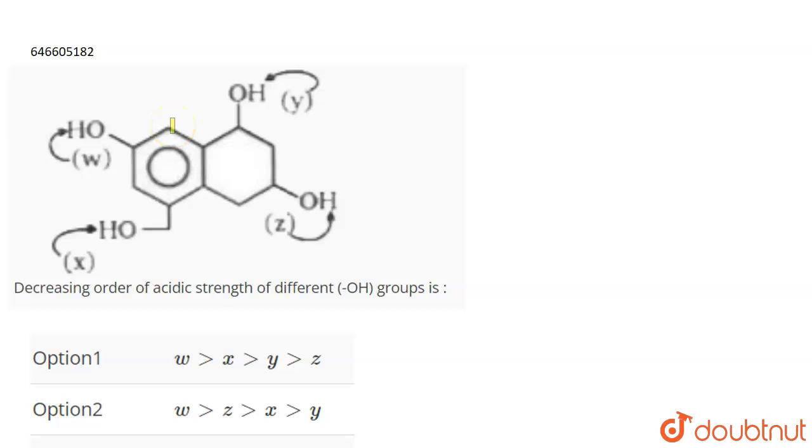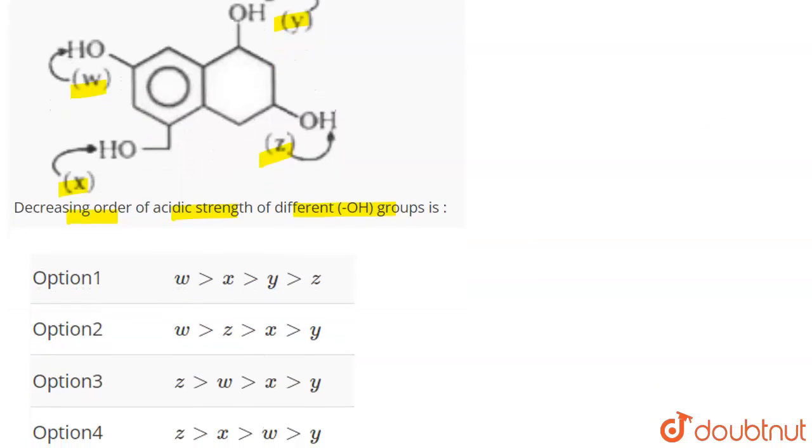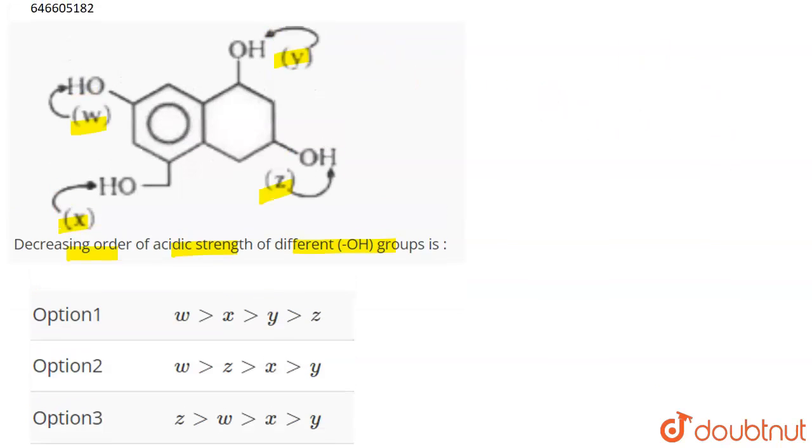The question is you're given a compound here, and you have to give the decreasing order of the acidic strength of different OH groups. So you're given X, W, Y and Z as OH groups. You have to give the decreasing order of their acidic strength.